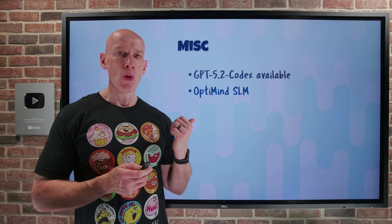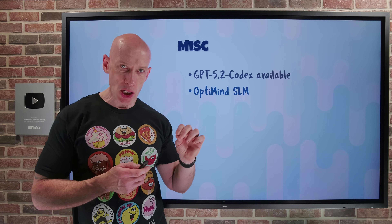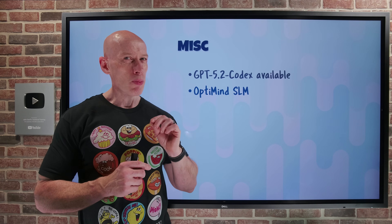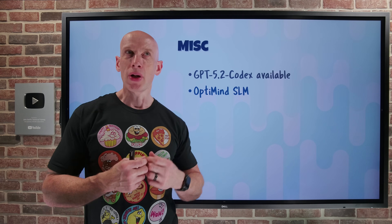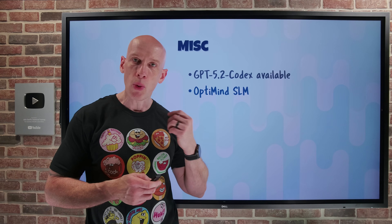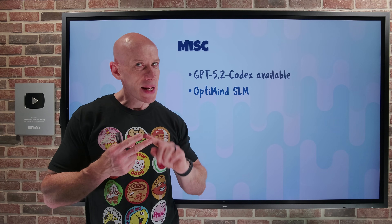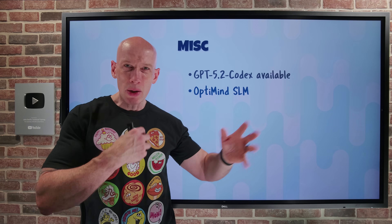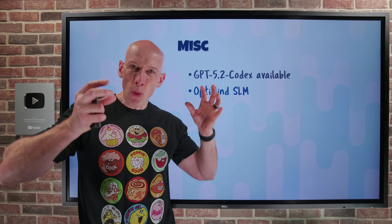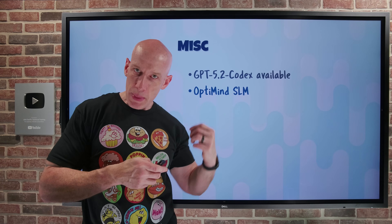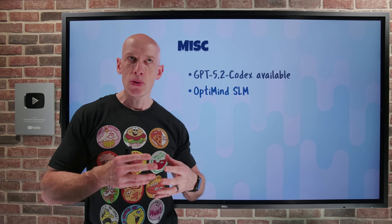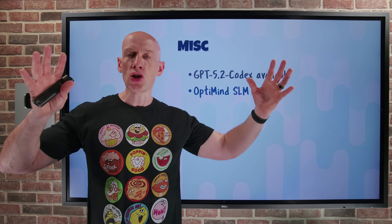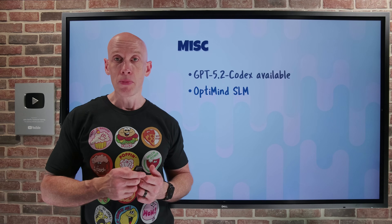There's also the OptiMind small language model — an experimental specialized small language model from Microsoft Research. As the name hints, it's focused on optimization problems: scheduling a large workforce, designing a supply chain, deploying networks, or doing financial portfolio optimization. It's designed for what's known as mixed integer linear programming type problems. It classifies the problem, gets hints on the identified problem class, and generates a solution with optional self-correction — working out the best combination of choices based on rules and limits you give it. For those very specialized use cases, you'll get better performance compared to a generalized large language model. You can try it out on Microsoft Foundry today.